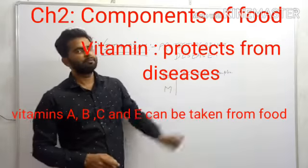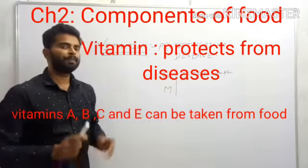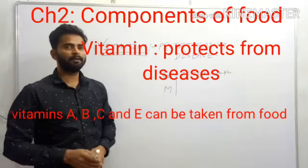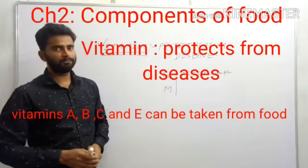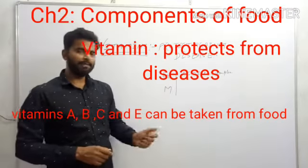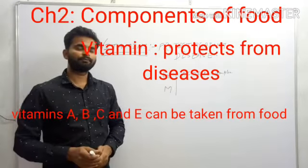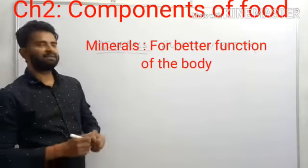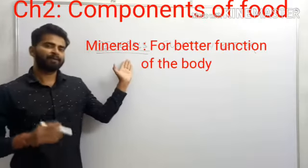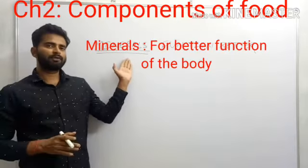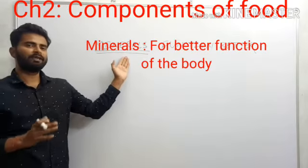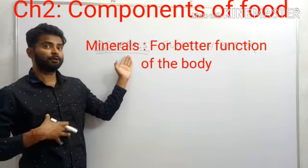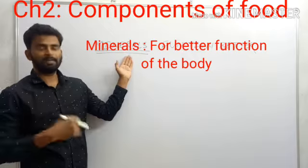Some vitamins our body can produce, like vitamin D and vitamin K. However, vitamins A, C, and B cannot be produced by our body. After vitamins, we will see minerals. Minerals are also a very important component because they help our body to function well.